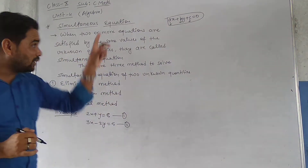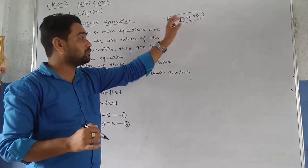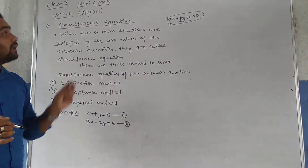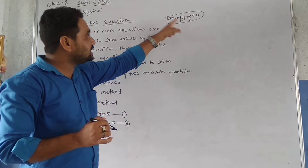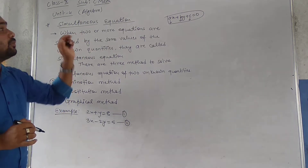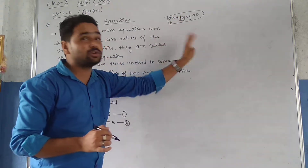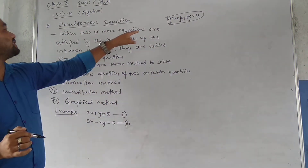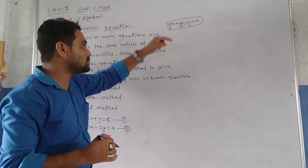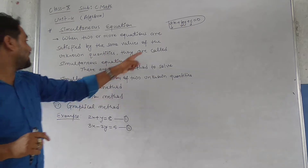X and Y are the unknown quantities — two unknown quantities. When we get the values of X and Y, and when we put those values into the same equations, then they are satisfied. That is why: if two unknown variables are there, then two equations must be present. If three unknowns are there, then three equations should be present. When two or more equations are satisfied by the same values of the unknown quantities — first equation and second equation both satisfied with the same values of X and Y.